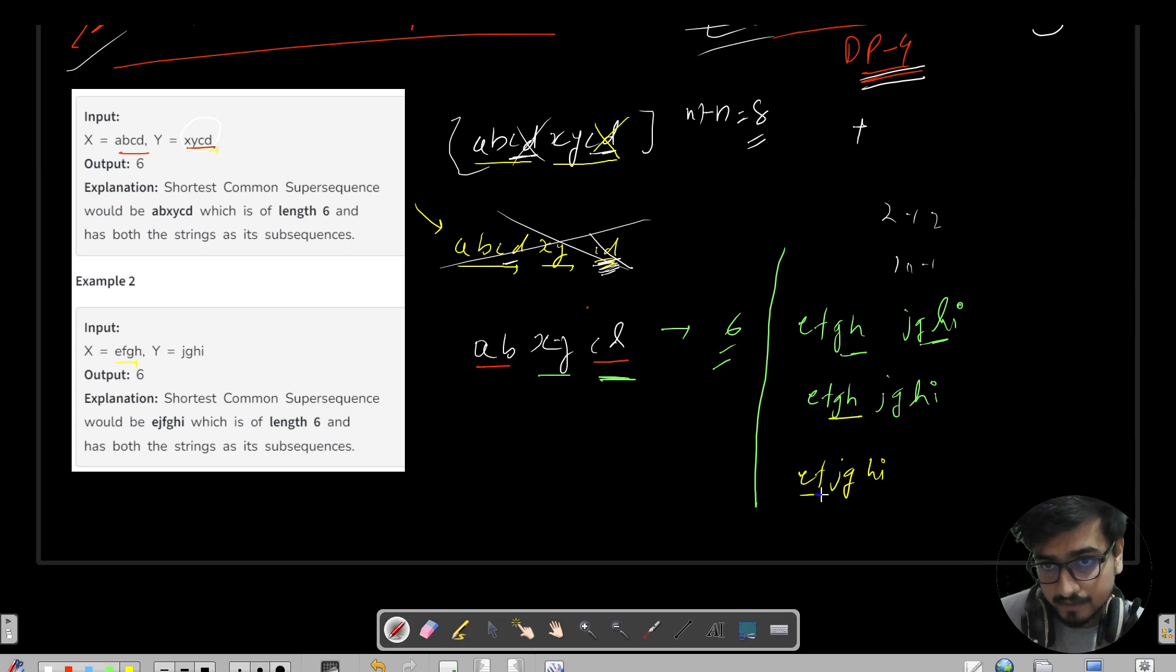Let us assume that we have removed this one. So I have the answer EFJGHI. Do I have all the strings in my answer present? So EFGH, I have EF, I have GH great. Now another string is JGHI, so I have JGHI, the order is also maintained. This is one of my answer. The length is 6.